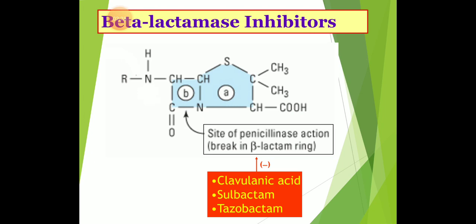There are basically three beta-lactamase inhibitors available in the market: clavulanic acid, derived from Streptomyces clavuligerus; sulbactam, which is a semi-synthetic compound; and tazobactam, a structural analog of sulbactam. Beside these, there is one more invented very recently, called avibactam. They are combined with their respective beta-lactam antibiotics on the basis of their pharmacokinetic properties and usefulness in clinical trials.